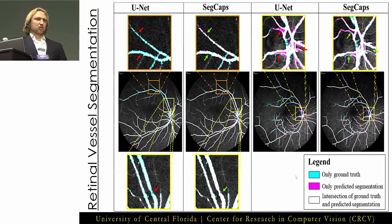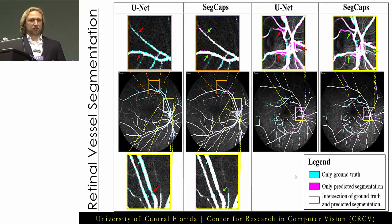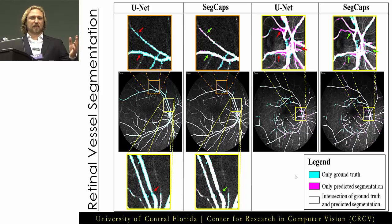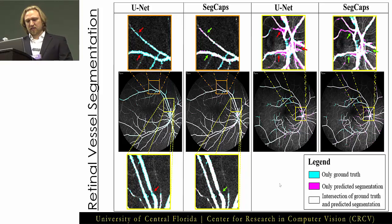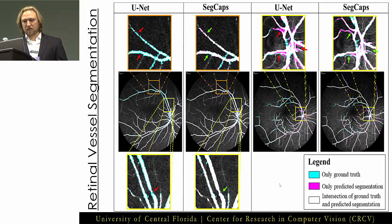The next application is retinal vessel segmentation. On the left you can see U-Net is struggling with under-segmentation on a particular patient — missing smaller vessels that SegCaps doesn't have issues with. On the right with a different patient, U-Net has the opposite problem: it's over-segmenting, shown by areas of magenta color where U-Net really struggles. SegCaps doesn't have those same over-segmentation issues.